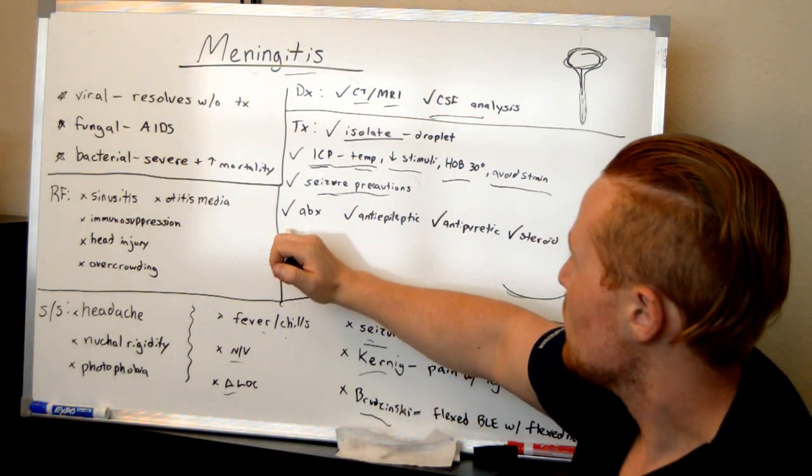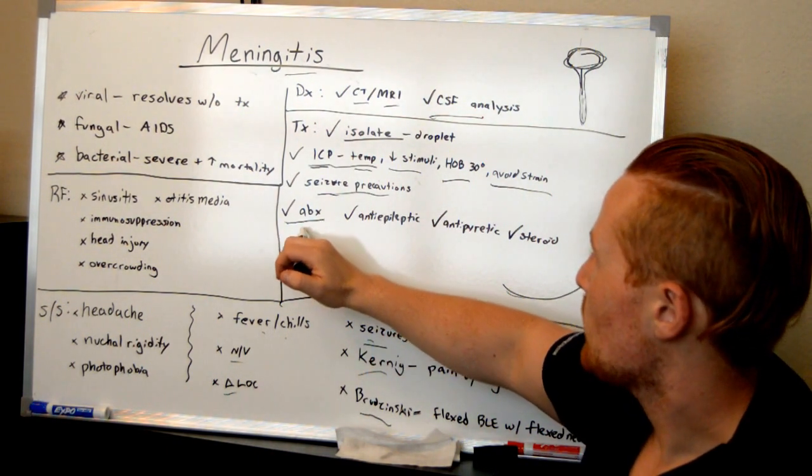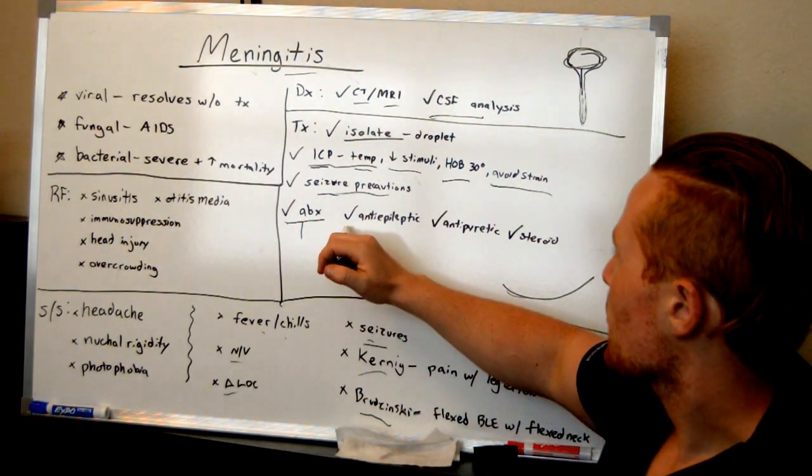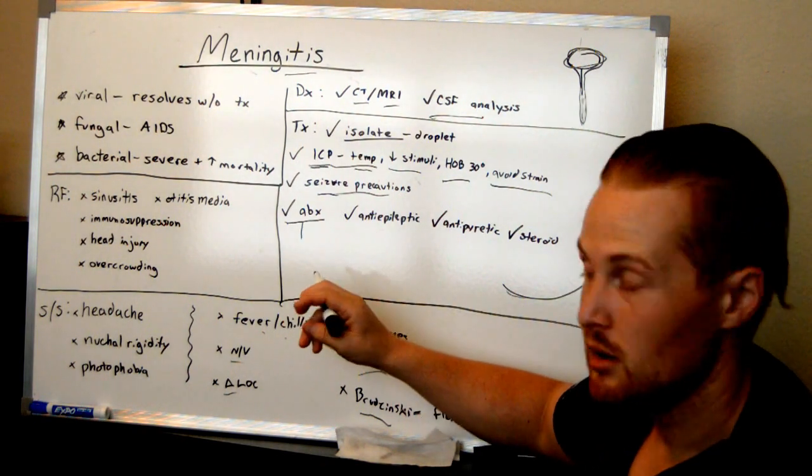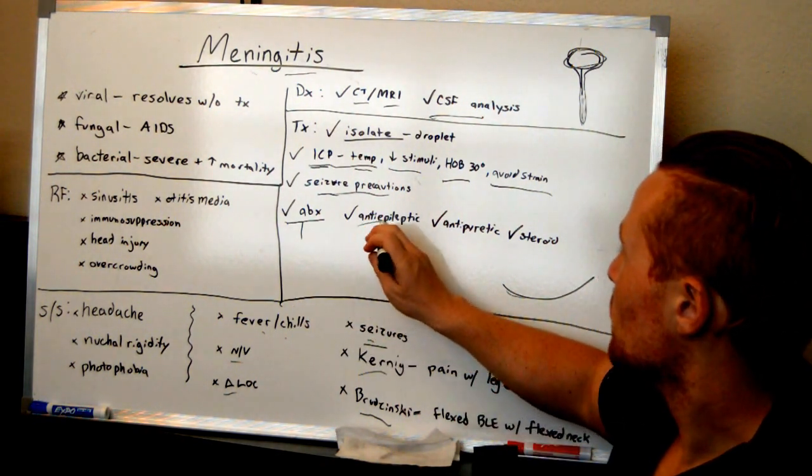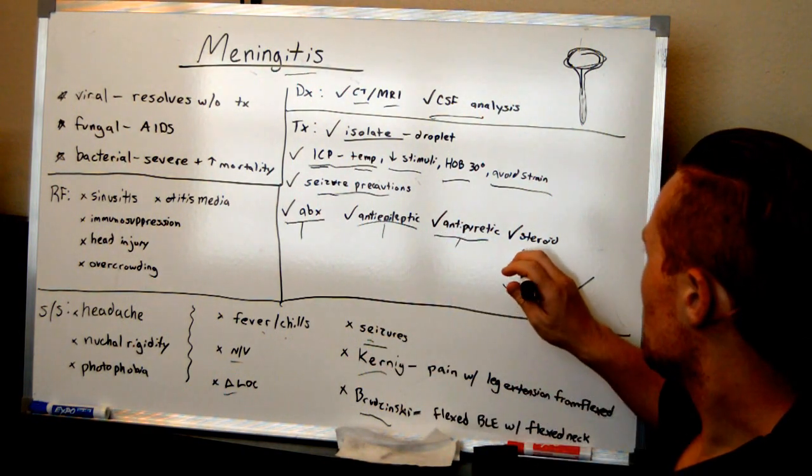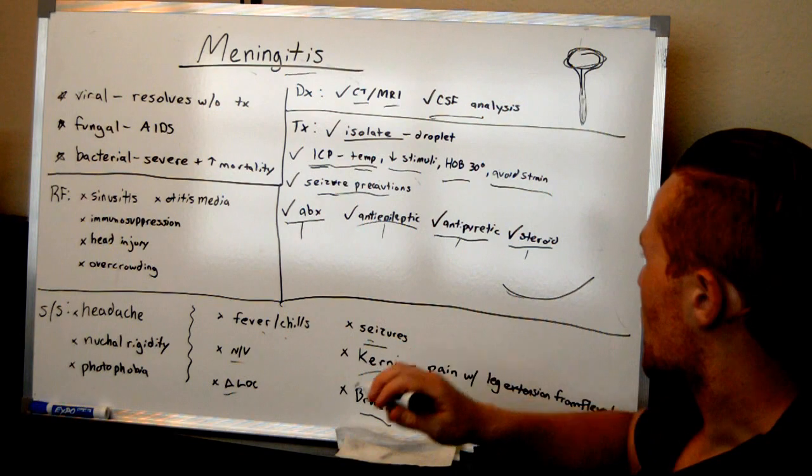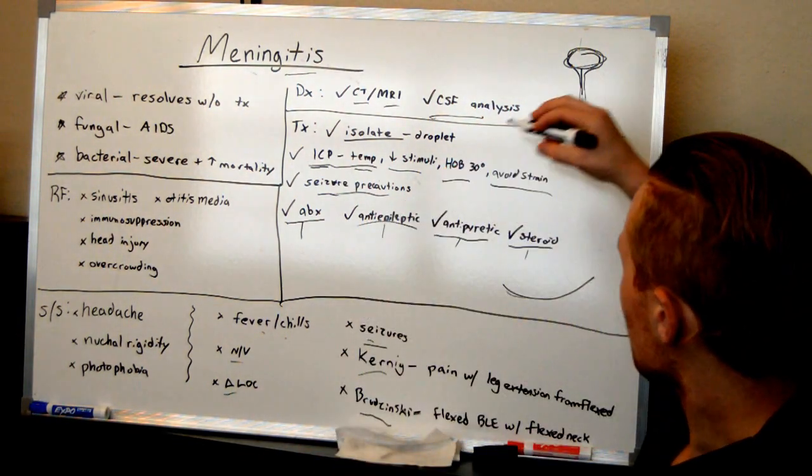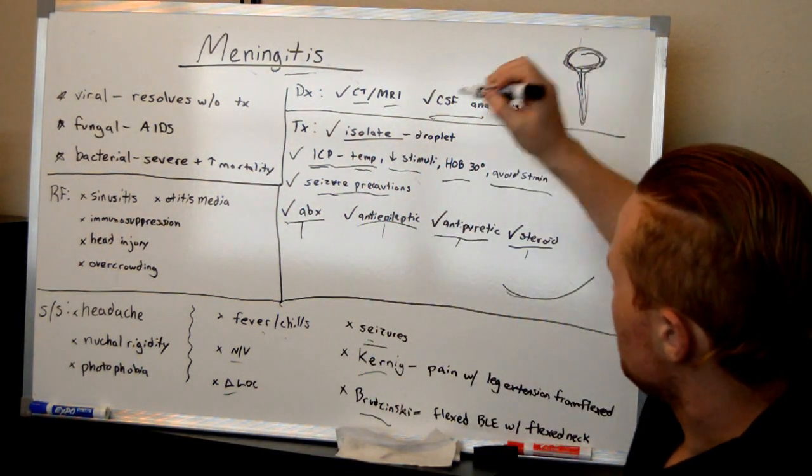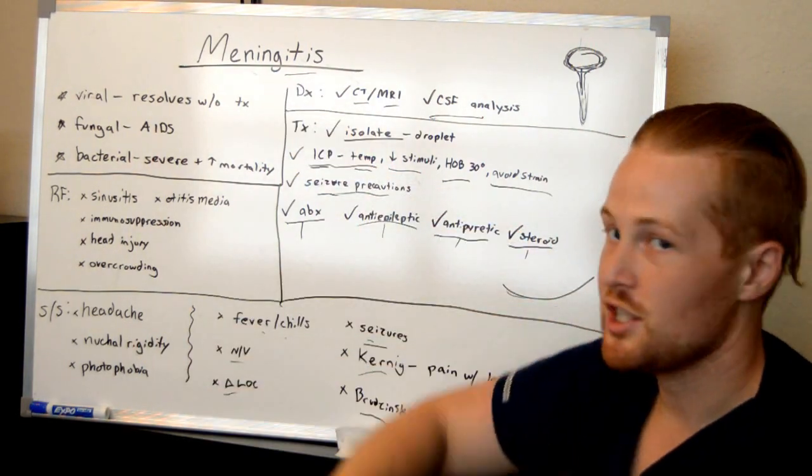How do you treat meningitis though? If it's bacterial, you want to give them antibiotics. And this is going to be the main treatment. As far as other symptoms, you want to give them anti-epileptics if they're having seizures. Antipyretics if they're having fevers. And steroids can help by getting rid of swelling around the spinal column and around the brain. So this is meningitis.